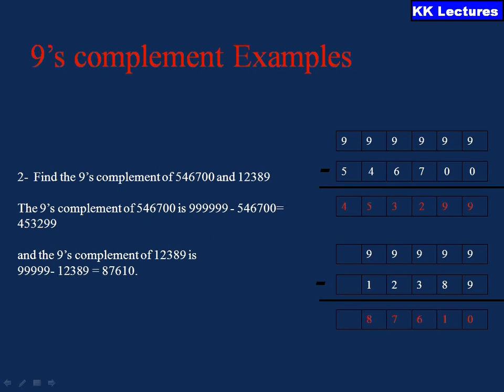One more example: to find the 9's complement of 546700, I subtract each and every digit from all 9's and get the result 453299. That is the 9's complement of 546700. Likewise, in the second example, each and every digit is subtracted from all 9's and you can see the result.